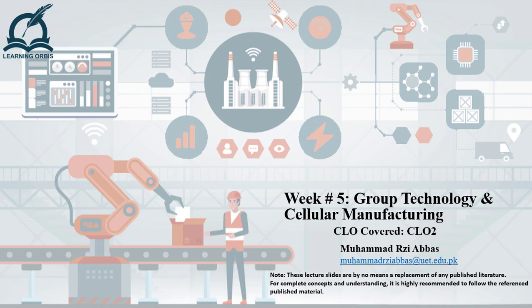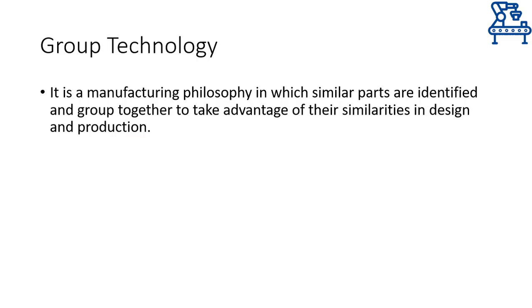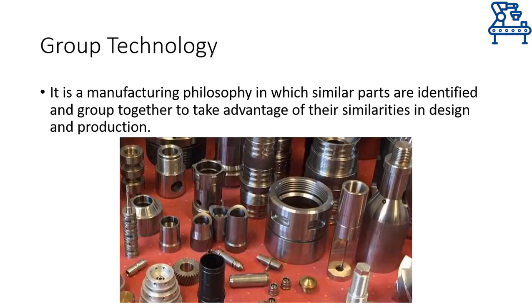In this lecture, I am going to discuss this last type of manufacturing system, and in the process, I will talk about a few other related concepts as well. One of the related concepts is group technology — a manufacturing philosophy in which similar parts are identified and grouped together to take advantage of their similarities in design and production processes.